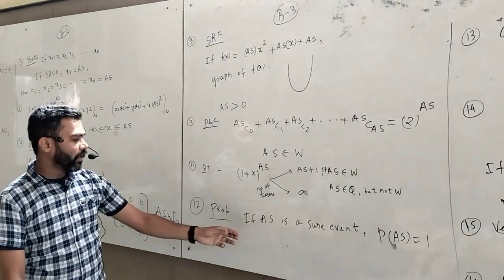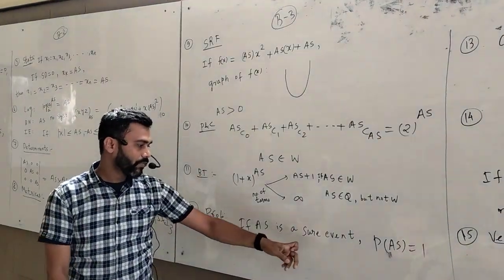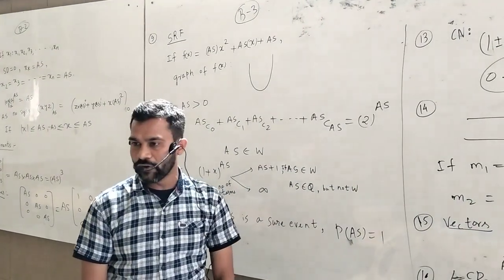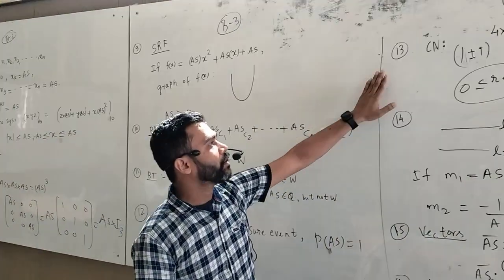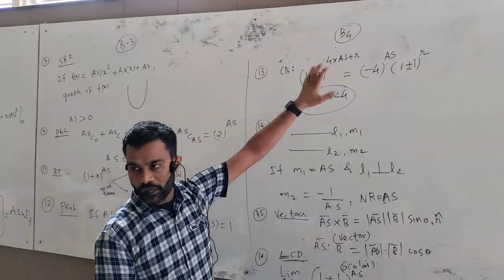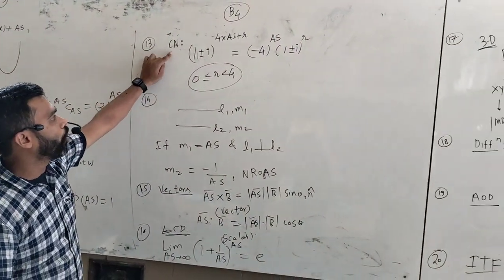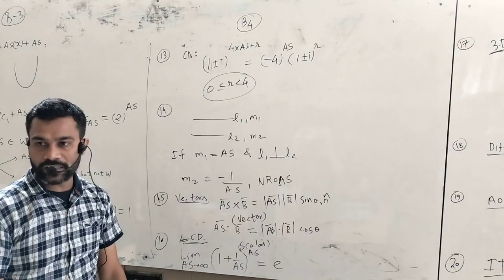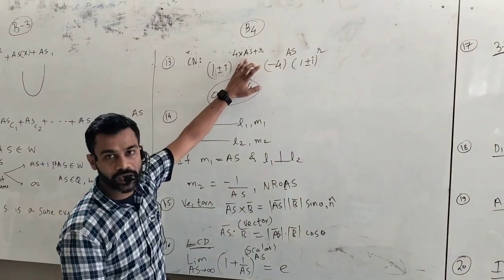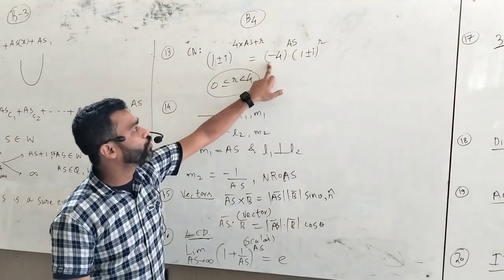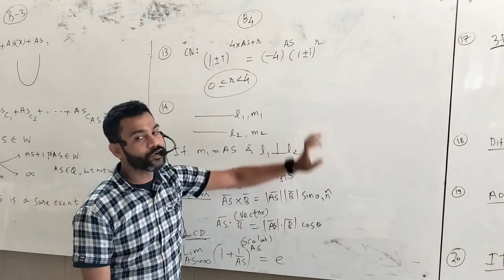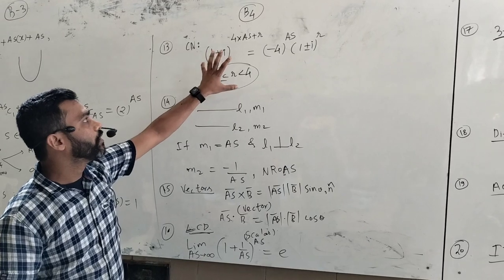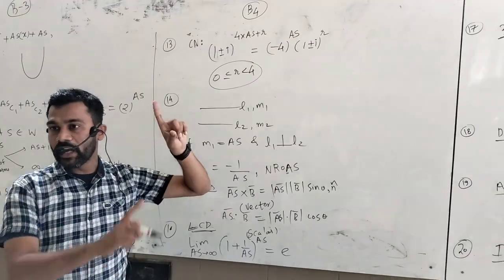Probability: if we consider Anisar as a sure event, then the probability of Anisar will be equal to 1. Book number 4, chapter number 13: complex numbers. So (1 ± i) to the power (4·Anisar + r) is equal to (−4) to the power Anisar × (1 ± i) to the power r, where r is the remainder obtained after dividing that power by 4, so r should be from 0 to 3.